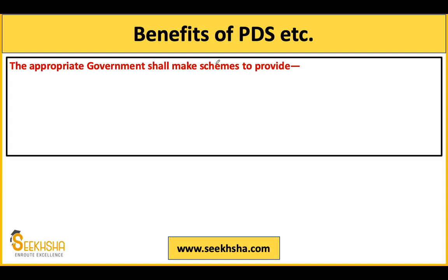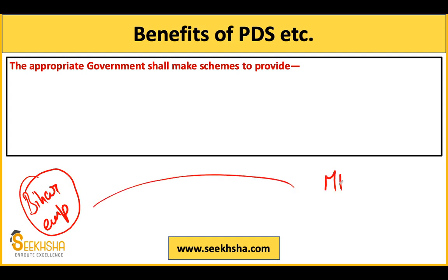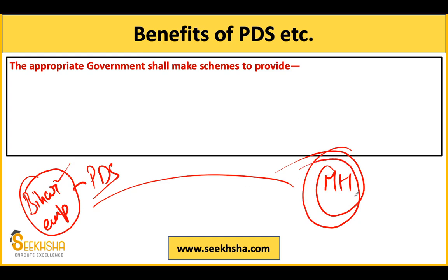There is also a provision for the benefit of PDS — Public Distribution System. For example, if a worker from Bihar is working in Maharashtra, he may be registered for PDS in Bihar. When he goes to a PDS shop in Maharashtra, he could be denied because he is not registered in Maharashtra. So this code provides that migrant workers can receive PDS benefits in their native state or transfer them to the destination state where they are employed.